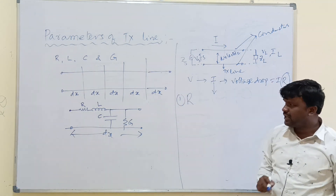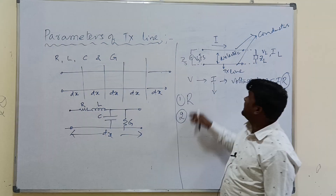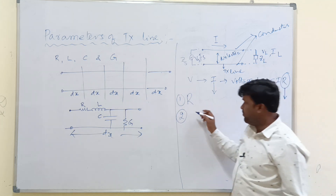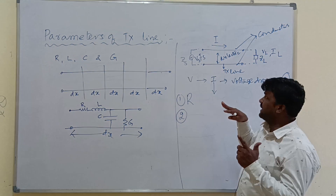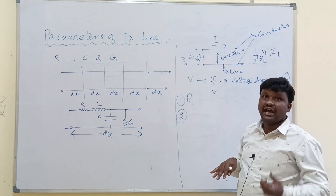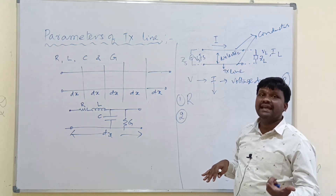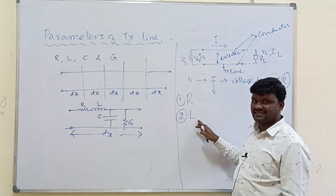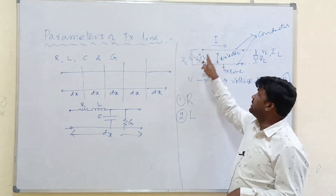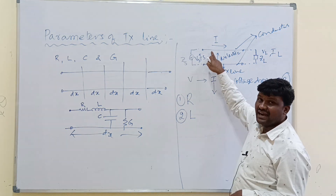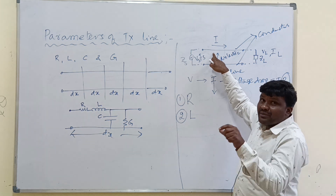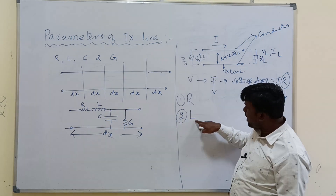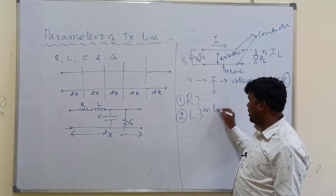Coming to L — when voltage is applied, current flows, and this conductor acts as a current-carrying conductor. A current-carrying conductor produces a magnetic field. Due to that magnetic field, there exists magnetic energy. To store that magnetic energy, we need the property called inductance. So R and L both exist on the line — they are series elements.